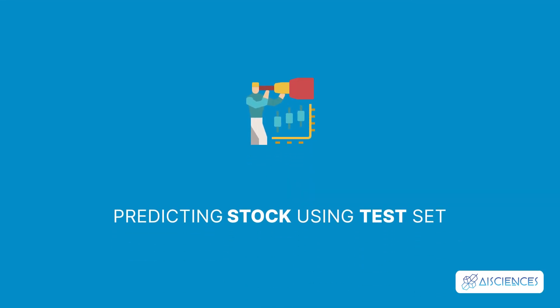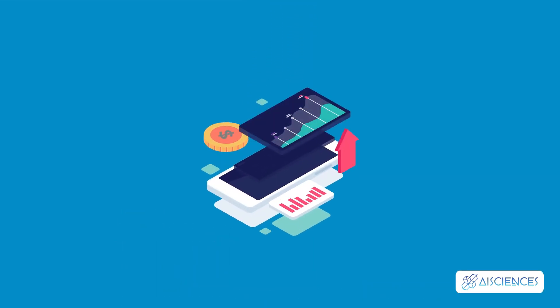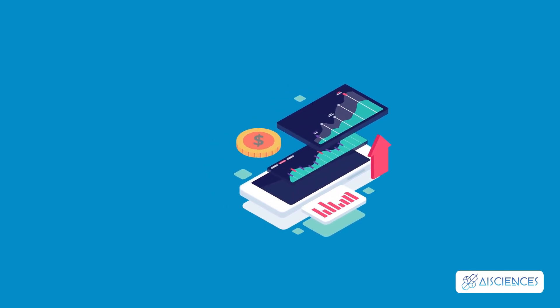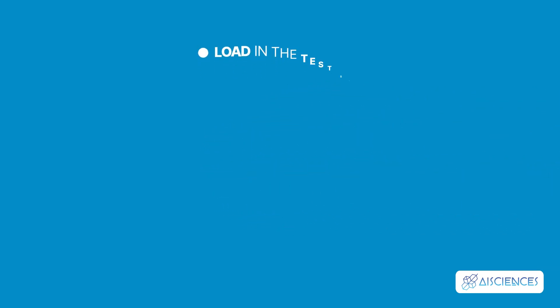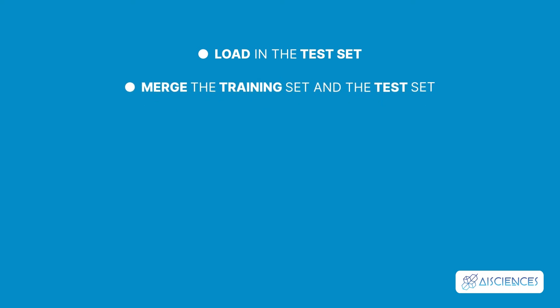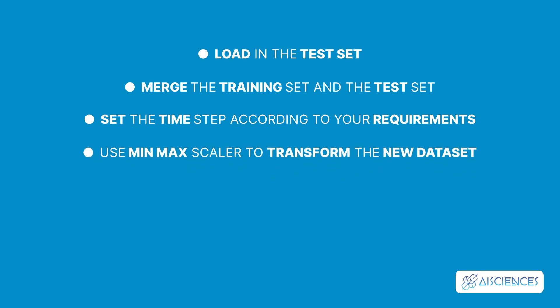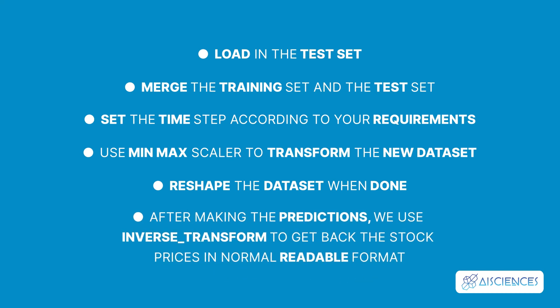Now let's talk about predicting stock using the test set. In order to predict the future stocks, we still have to do some things: Load in the test set, merge the training set and the test set, set the time step according to your requirements, use min-max scaler to transform the new dataset, and reshape the dataset when done. After making the predictions, we use inverse transform to get back the stock prices in a normal readable format.